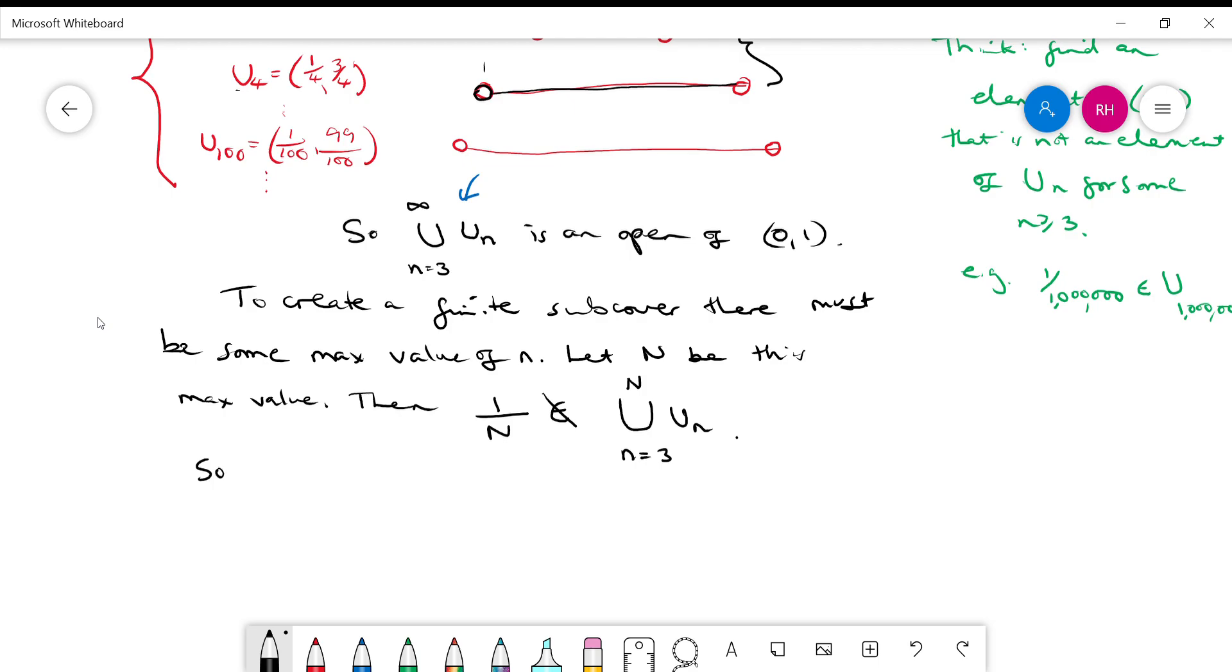So no finite sub cover exists. So therefore, (0,1) is not a compact set.